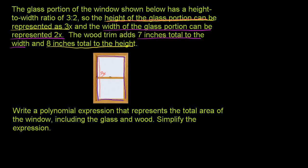They tell us the wood trim adds 8 inches to the total height. So if you take 3x and add the wood trim on either end, the total height — glass portion plus wood trim — is 3x plus 8. Now the width of the glass portion can be represented as 2x.